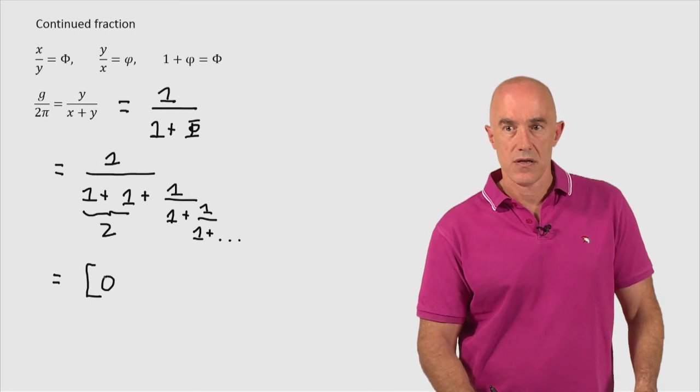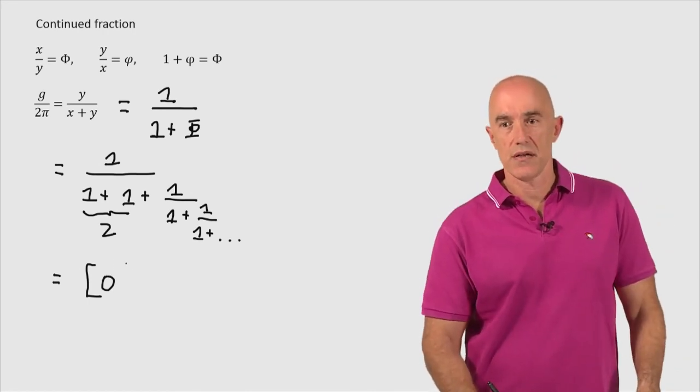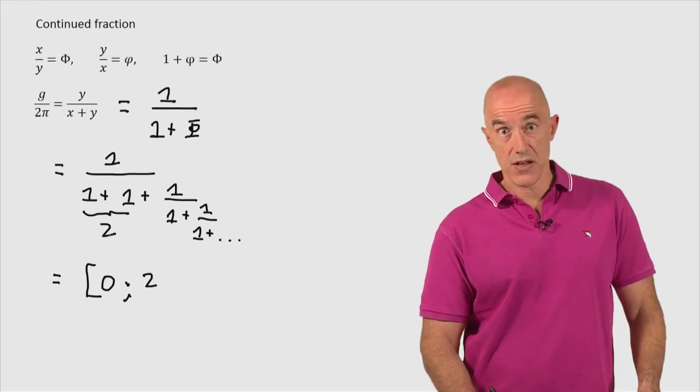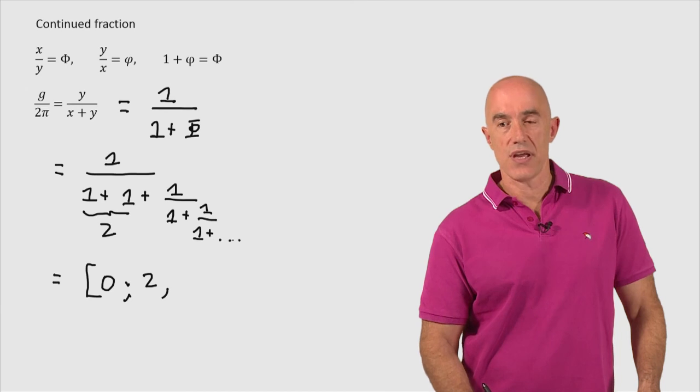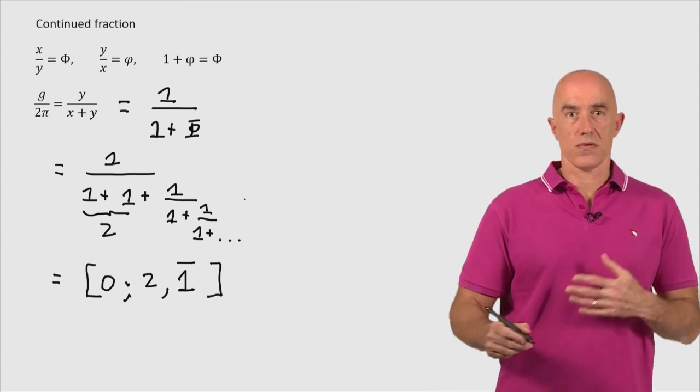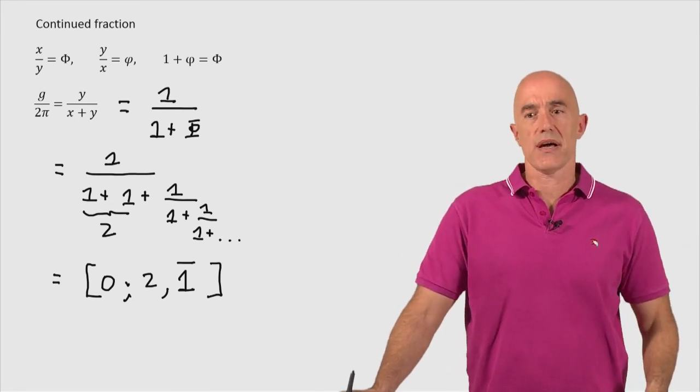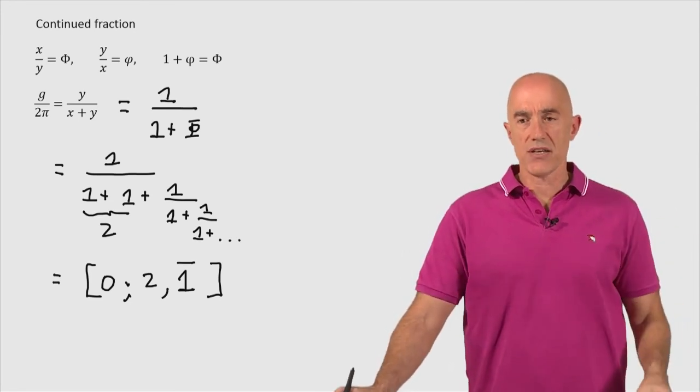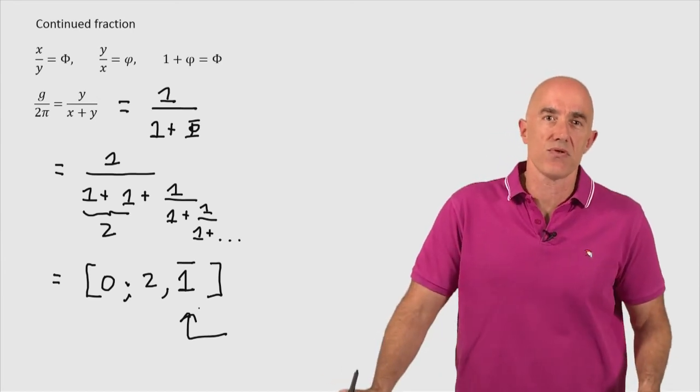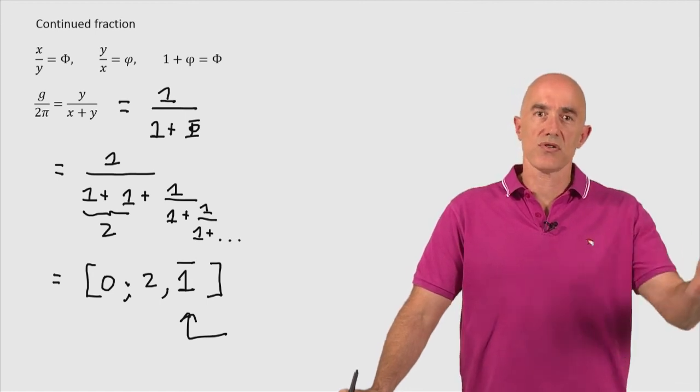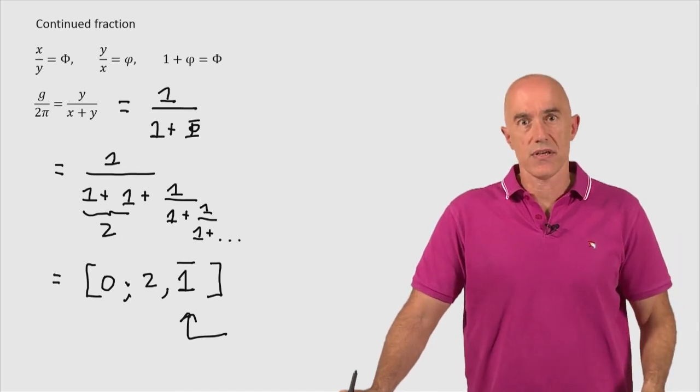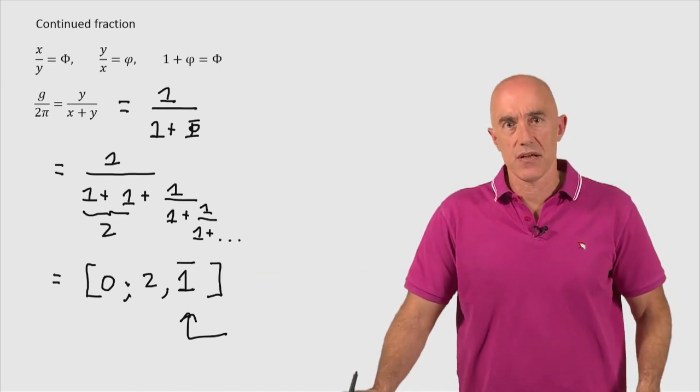A0 here is 0 because g over 2π is a number between 0 and 1. A1 is 2. This first value here is 2. And then a2, a3, a4, they're all 1s. So we get a 1 here and it just repeats forever. So the golden angle divided by 2π, normalized by 2π, has a continued fraction with all 1s at the end here. So it is also a very difficult number to approximate by a rational number. It is also the most irrational of the irrational numbers in the same way that phi itself has all ending 1s in the continued fraction expansion.